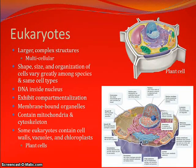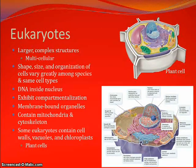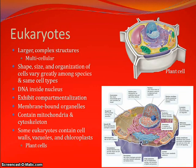Some eukaryotes also contain cell walls, vacuoles, and chloroplasts — an example being plant cells, which do contain cell walls, chloroplasts, and vacuoles. However, animal cells do not.